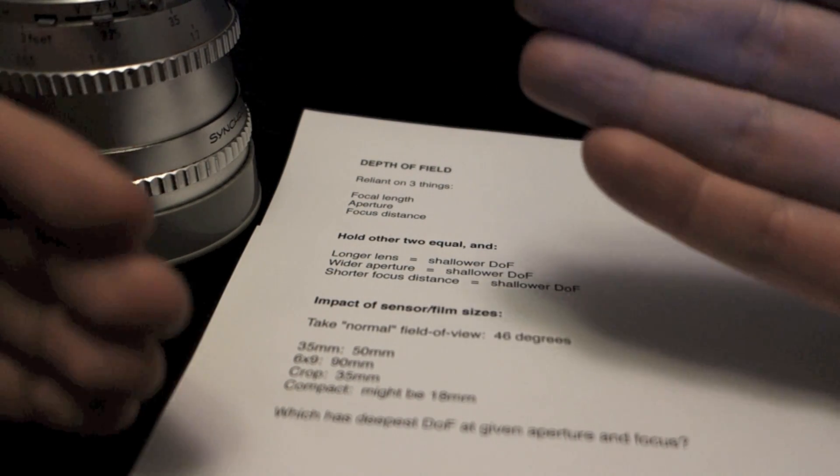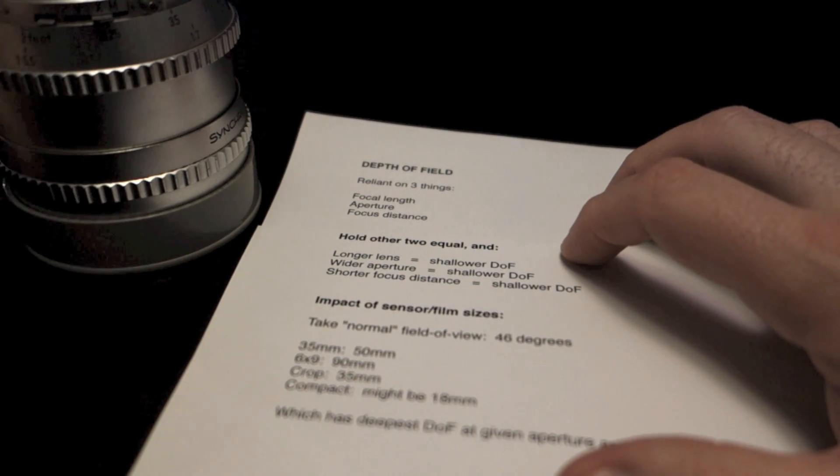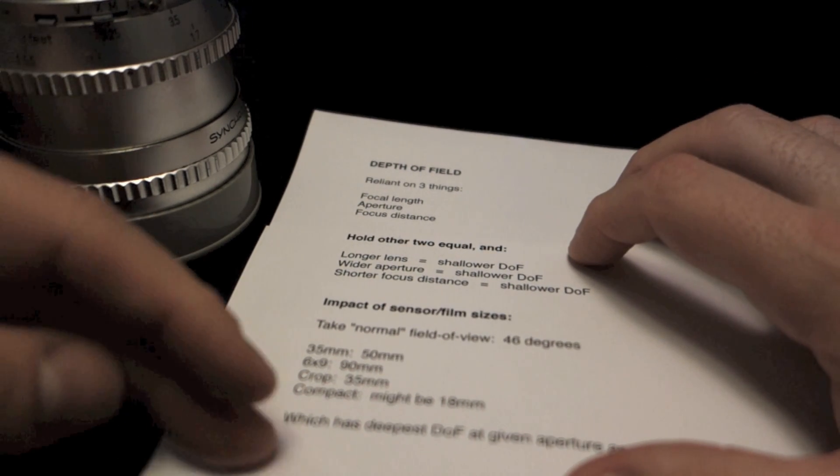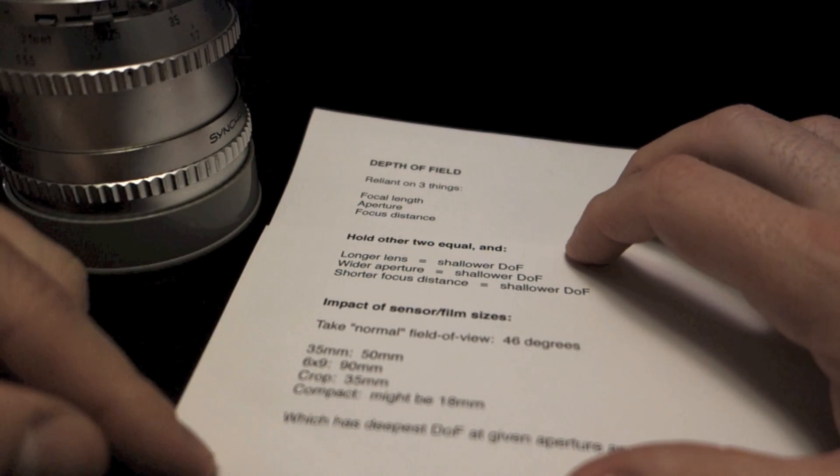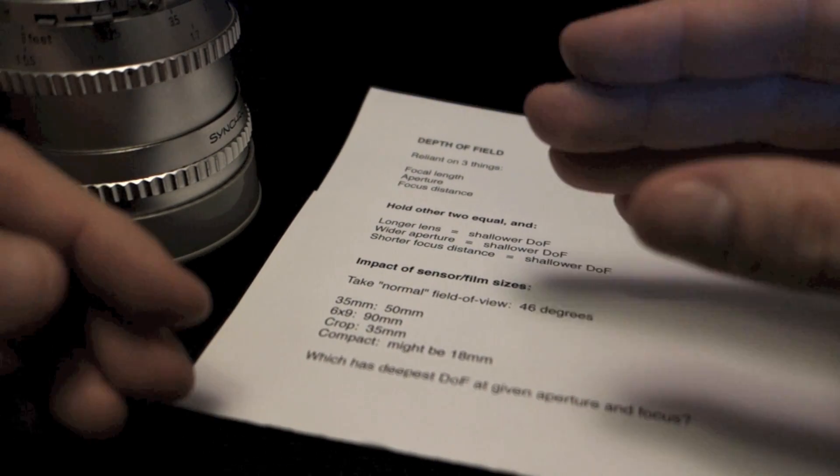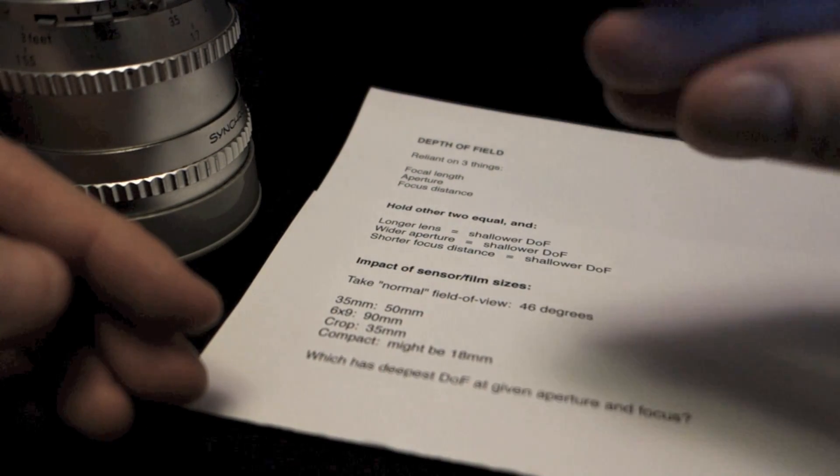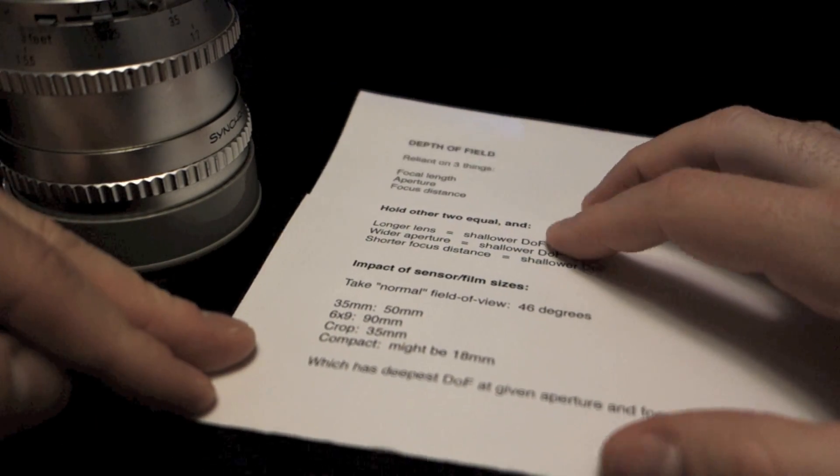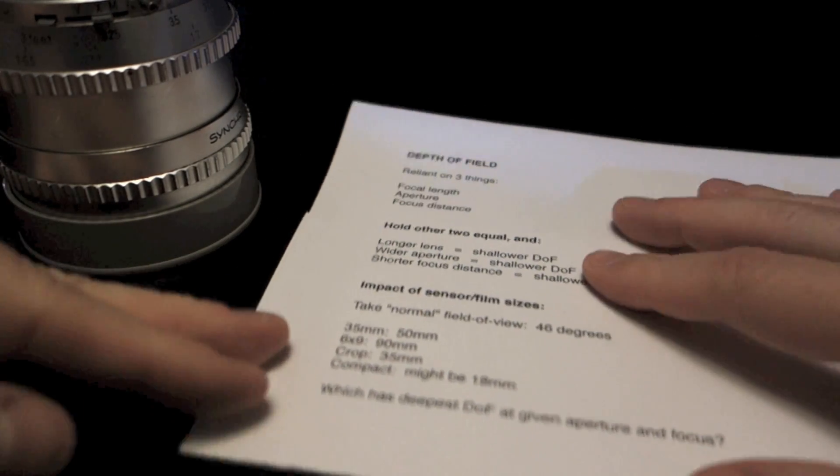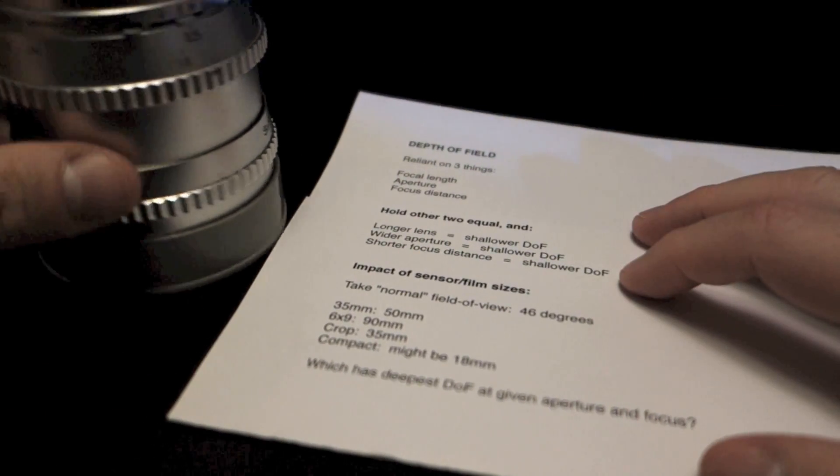So, a lot of view camera folks will shoot at very small apertures. The lenses go down to f64 a lot of the time. And then they use the movements to get stuff in focus because the depth of field is so shallow on those cameras.